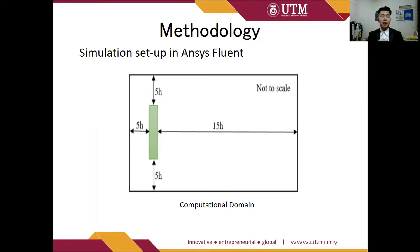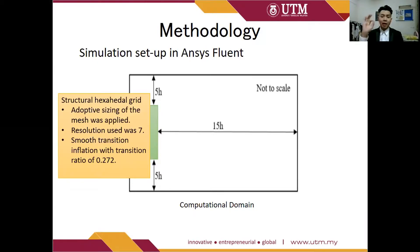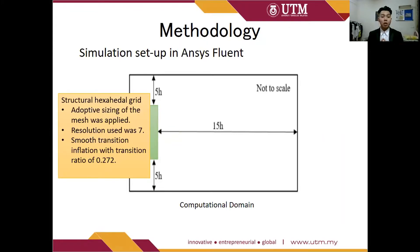This is the simulation setup in ANSYS Fluent, designed according to major CFD recommendations and previous researchers. The computational domain was designed such that the inflow, lateral, and top boundaries were set 5H away from the building, where H is the height of the building, which in this case was 1.5 meters. The outflow boundary was at 15H behind the building to allow the flow to fully redevelop. The mesh had to be fine enough to provide sufficient resolution of the necessary flow features and geometrical structures. A structured hexahedral grid was used, with adaptive sizing applied, resolution set at 7, and smooth transition inflation with a transition ratio of 0.272.